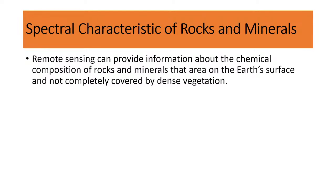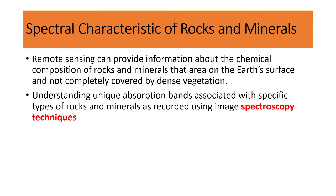Spectral remote sensing can provide information about the chemical composition of rocks and minerals that are on the earth's surface and not completely covered by dense vegetation. Understanding the unique absorption bands associated with specific types of rocks and minerals as recorded using spectroscopy technique allows us to easily identify different types of rock and mineral characteristics.